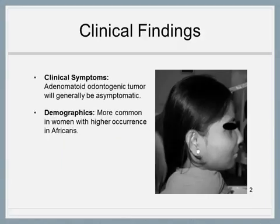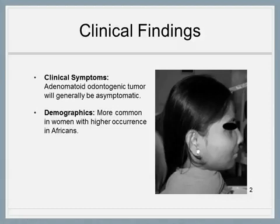Patients with AOT will generally be asymptomatic because the odontogenic epithelium is merely proliferating out of control. A few patients may complain of mild tenderness from palpation due to swelling impinging on the nerve endings. AOT is more common in women and more often located in the anterior arch compared to the posterior arch.